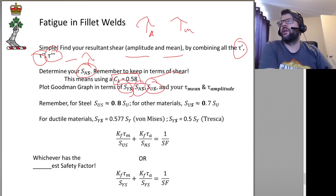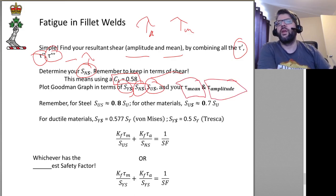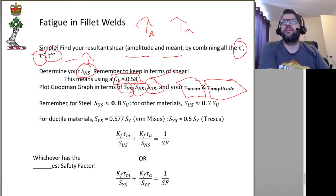We want to be plotting our Goodman graph in terms of SUS, SNS, and SYS — and then our tau-mean and tau-amplitude. Keeping in mind that typically speaking for steels, this information is also listed in Table 5-8 of Shigley's.